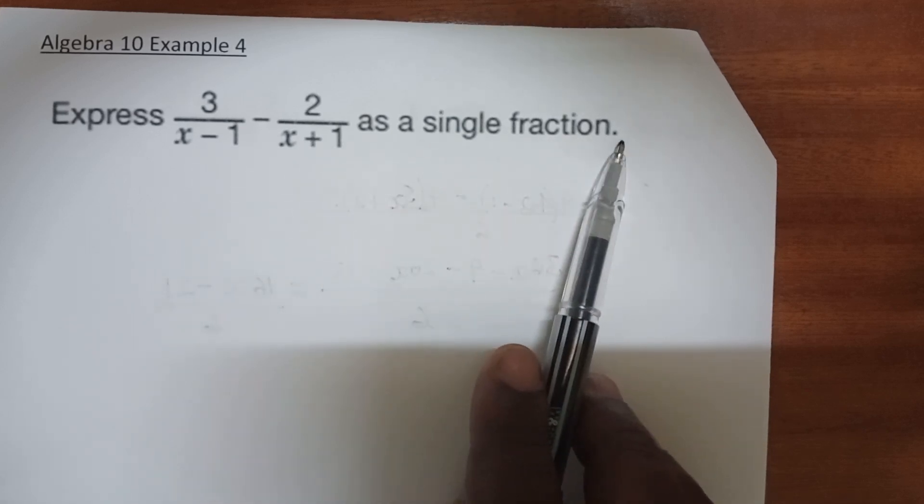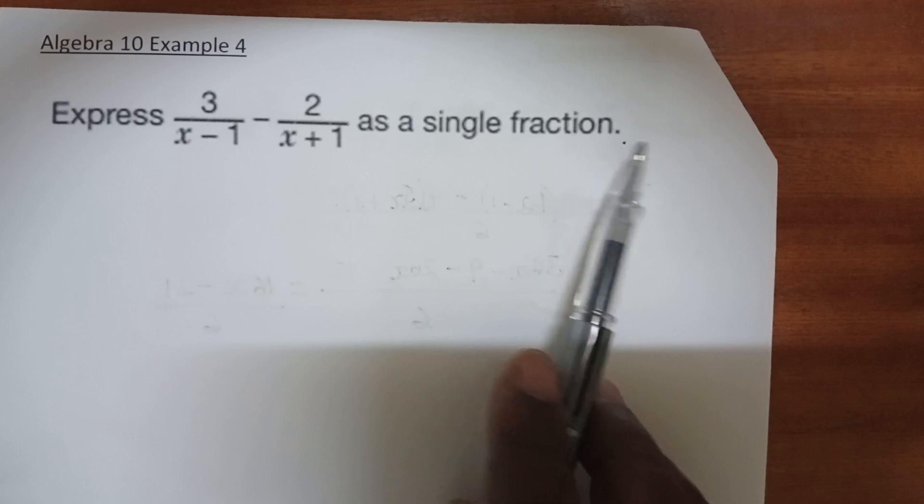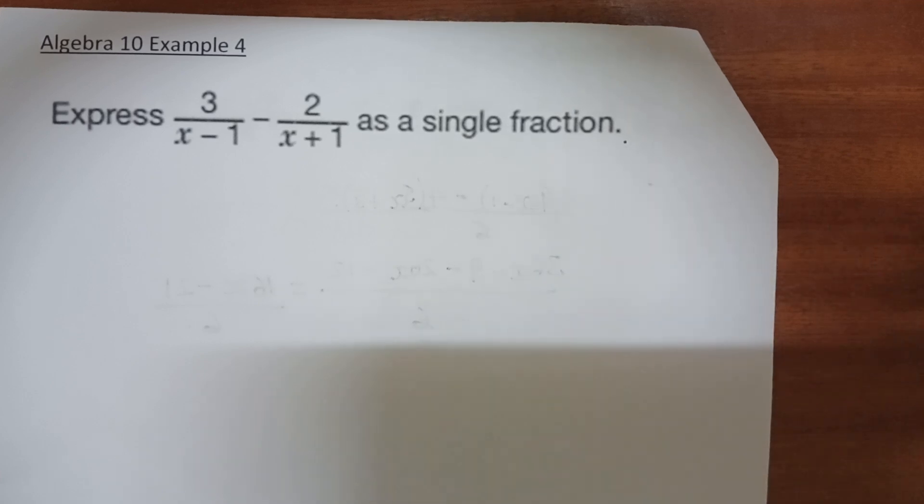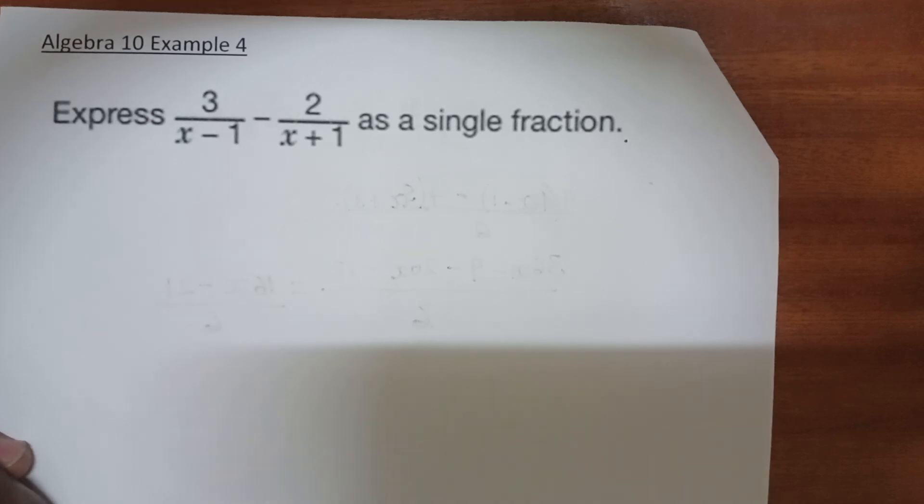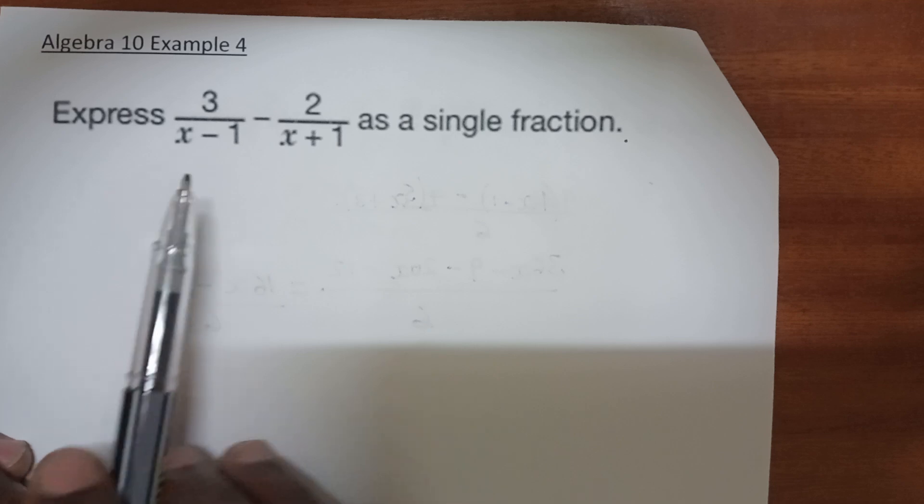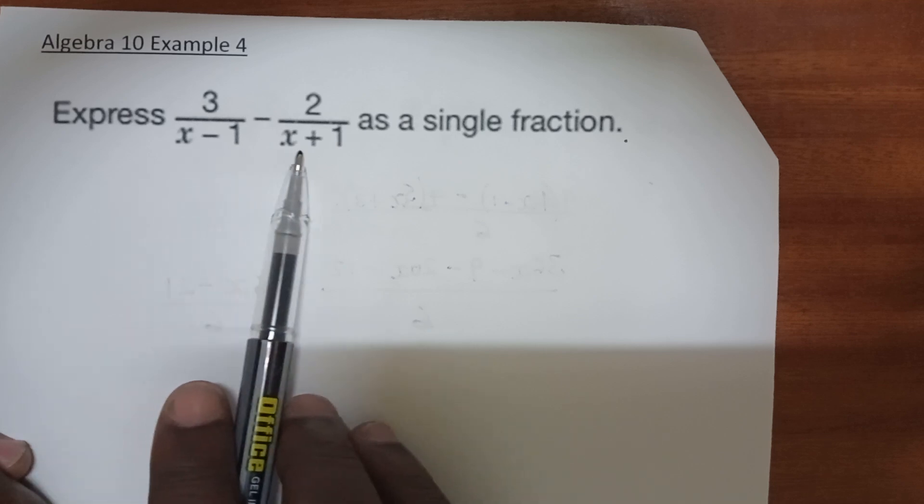As we have done in the previous example, that is example 3, the only thing that we need to do here is to identify the LCM of the denominators. And now that our denominators are both algebraic, they do not contain numbers, they have unknown values.